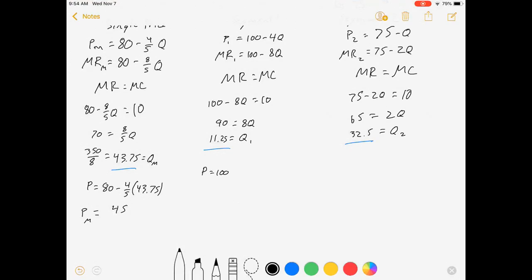Price equals 100 minus 4 times Q, 11.25, which means price is going to come out to be 55. That's the price if we charge separately to segment one.